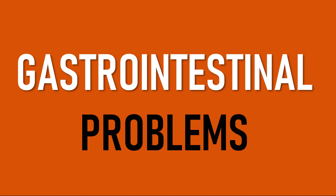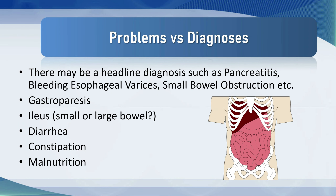Gastrointestinal problems. There may be a headline diagnosis like pancreatitis, bleeding esophageal varices, small bowel obstruction, etc. But there are all kinds of other problems with the gastrointestinal tract that you see in ICU: gastroparesis, ileus, small bowel or large bowel ileus, diarrhoea, constipation, malnutrition — and these are all worth listing. We don't really know why patients get ileus in critical illness; it's part of the paradigm of multi-organ dysfunction. So you might just say the patient has an ileus and leave it at that, and certainly it is contributing to malnutrition.